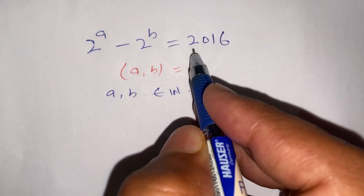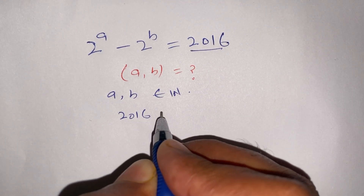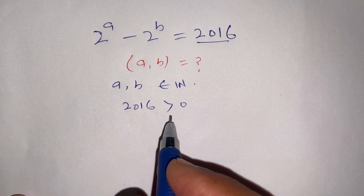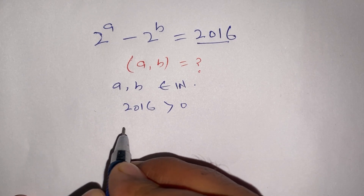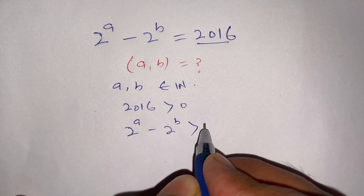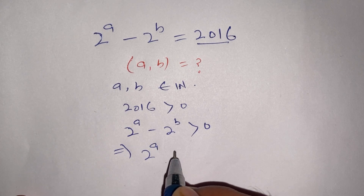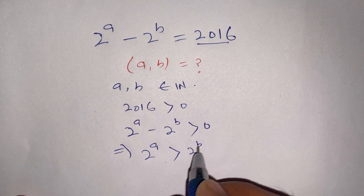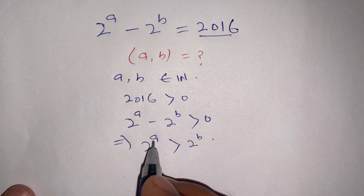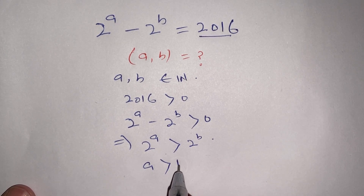First of all, we take our right-hand side 2016, and 2016 is greater than zero. If the right-hand side is greater than zero, then 2^a minus 2^b is also greater than zero. This implies 2^a is greater than 2^b, which means that a must be greater than b.